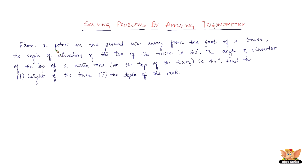Let's first get the diagram for this sentence. From a point on the ground 40 meters away from the foot of the tower — so we first have to get the foot of the tower. To get the foot of the tower, we need to get the tower. So here is the tower, this is the foot of the tower, and 40 meters away from the foot of the tower — so say this is that point, which is 40 meters away from the foot of the tower.